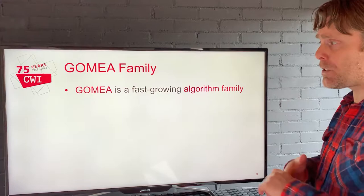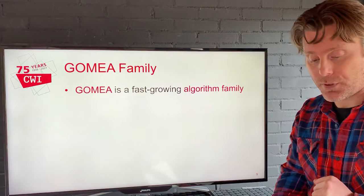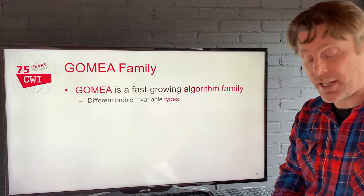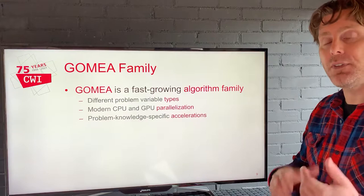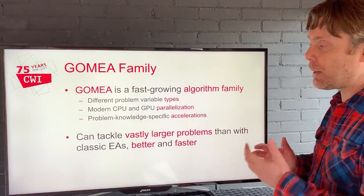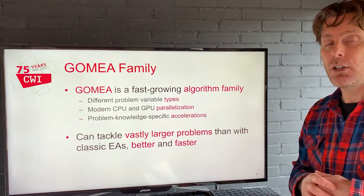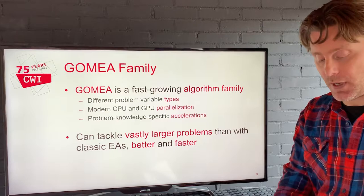GOMEA has proven very successful, so we've made it into a fast-growing evolutionary algorithm family. We now have different versions for different variable types — real-valued, permutations, discrete Cartesian — modern CPU and GPU parallelization to get the most out of available hardware, and ways of leveraging problem knowledge to make the algorithm go even faster. By doing so, we're able to tackle vastly larger problems than with classic EAs — not problems with tens or hundreds of variables, but millions of variables within the same amount of time.